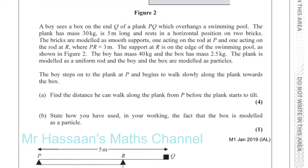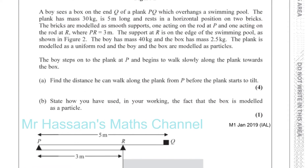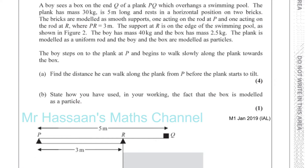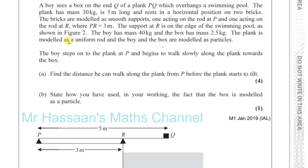Let's put this information on the diagram, and put the diagram down here so we can see the information when we're doing the working. So the plank has a mass of 30 kilograms, and we're also told that the plank is a uniform plank, so it's modeled as a uniform rod. Therefore, we take its weight to act through its geometric center. It's 5 meters long, so 2.5 meters in from the end will be where the weight of the plank acts.